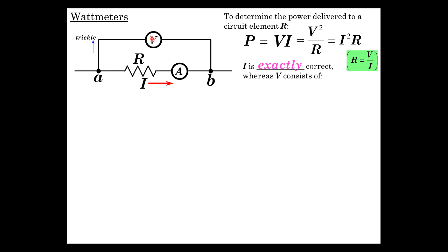What about the voltmeter? Is the voltmeter reading across the resistor? Well no, it's reading across the resistor and the ammeter, so its voltage consists of both. There is a little bit of voltage across the ammeter because it's not a zero ohm resistance there.